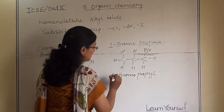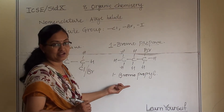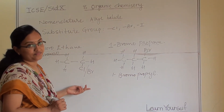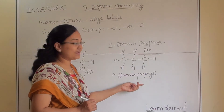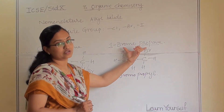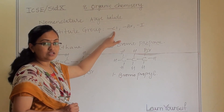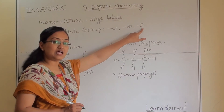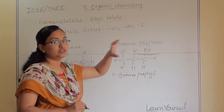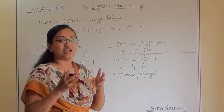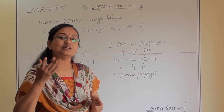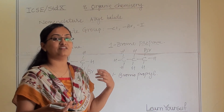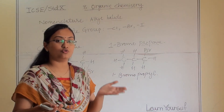So alkyl halides can also be named as 1-bromopropane or chloroethane. When it is chlorine, we write 'chloro-'; when bromine, 'bromo-'; when iodine, 'iodo-'. The key difference is that for alcohol and aldehyde we add a suffix ('-ol' and '-al'), whereas for halides we add a prefix (chloro-, bromo-, iodo-).